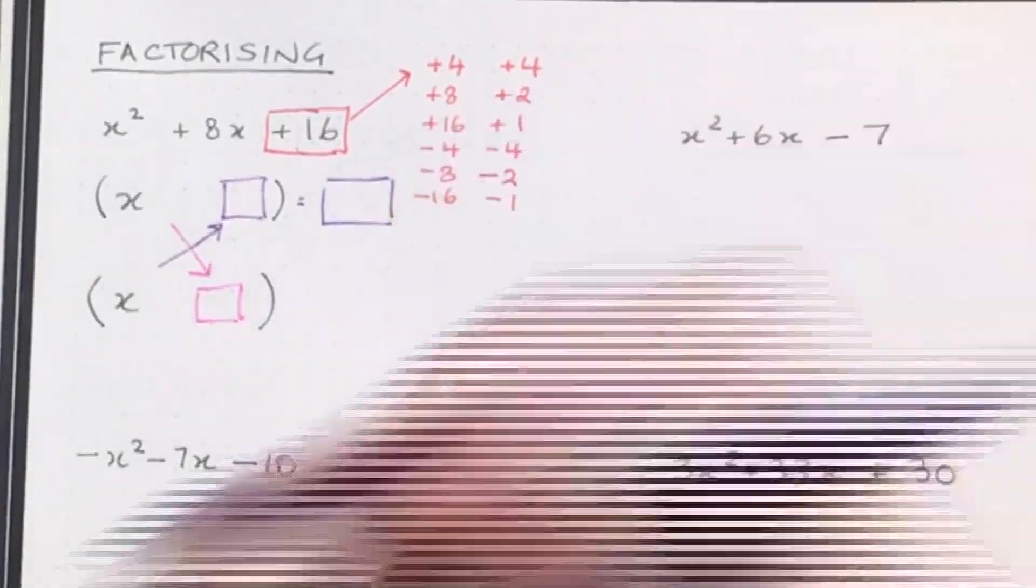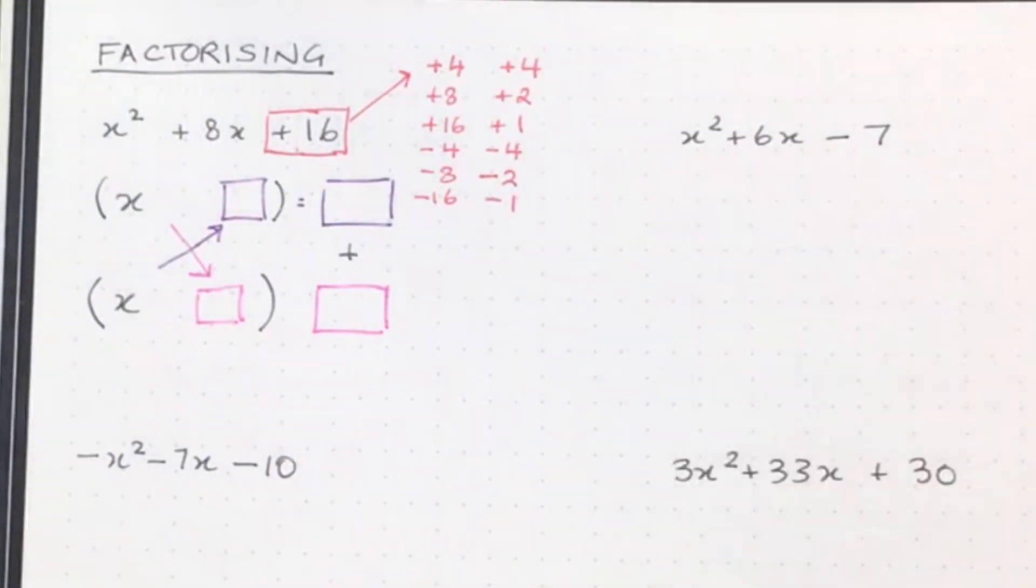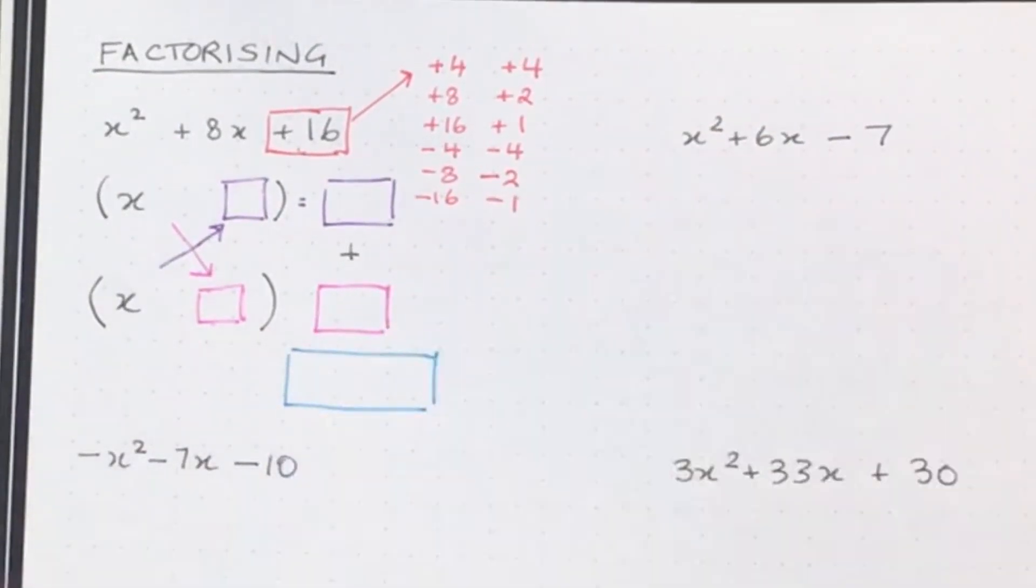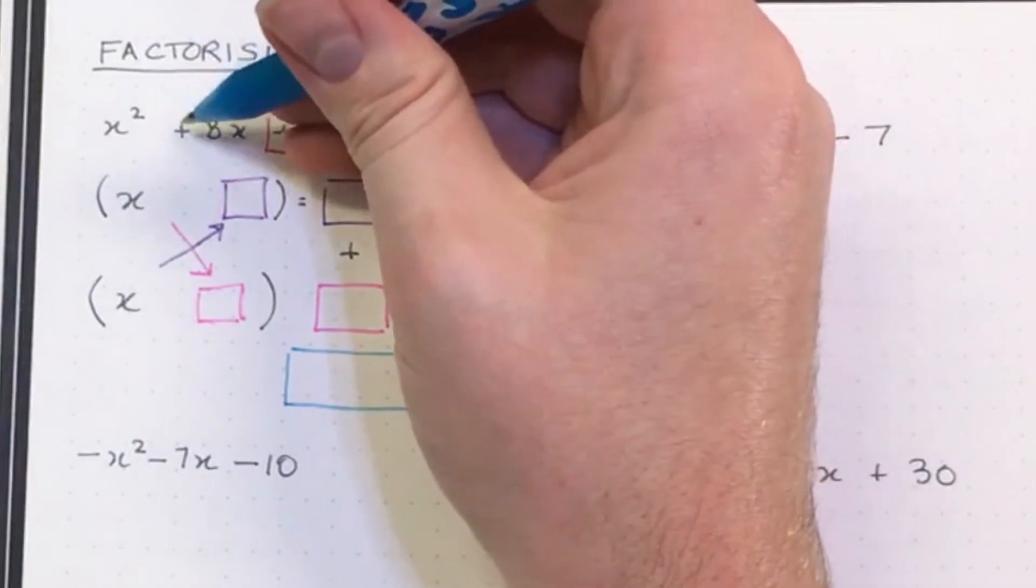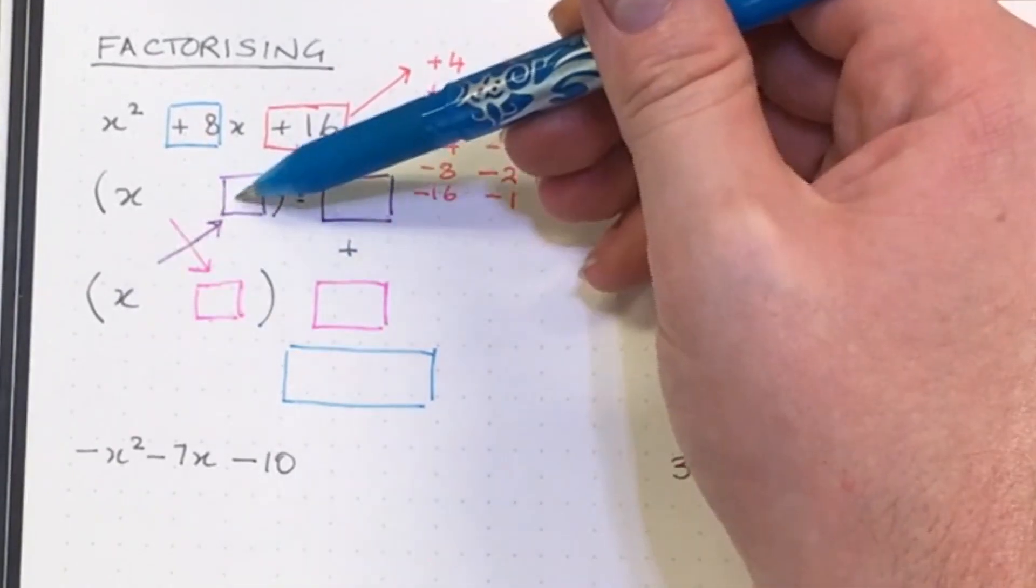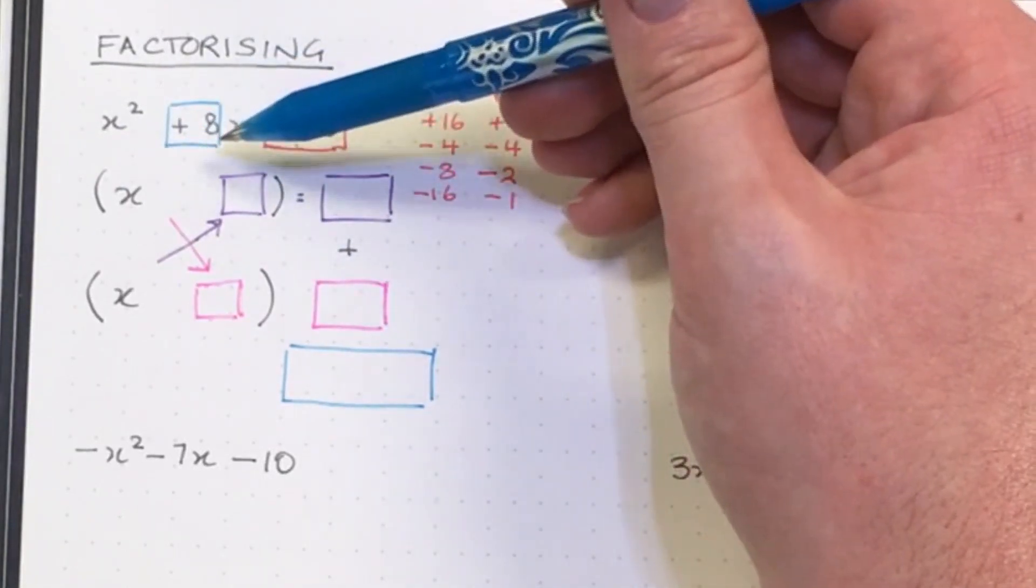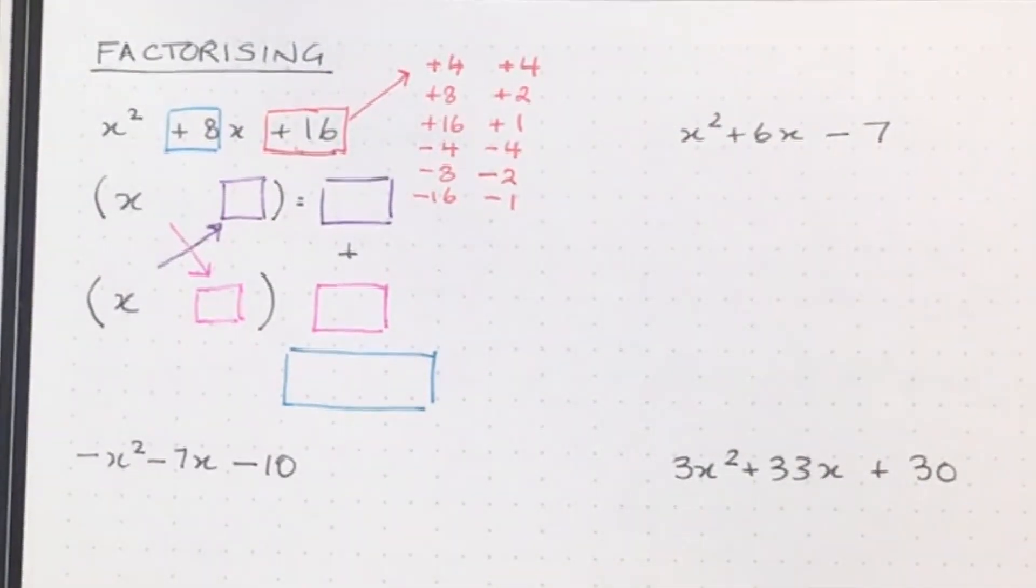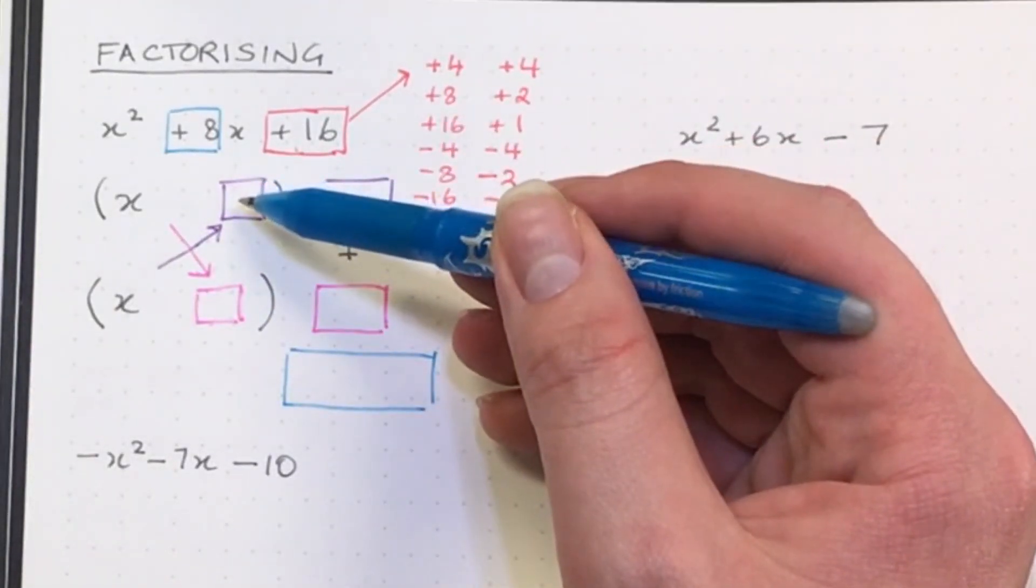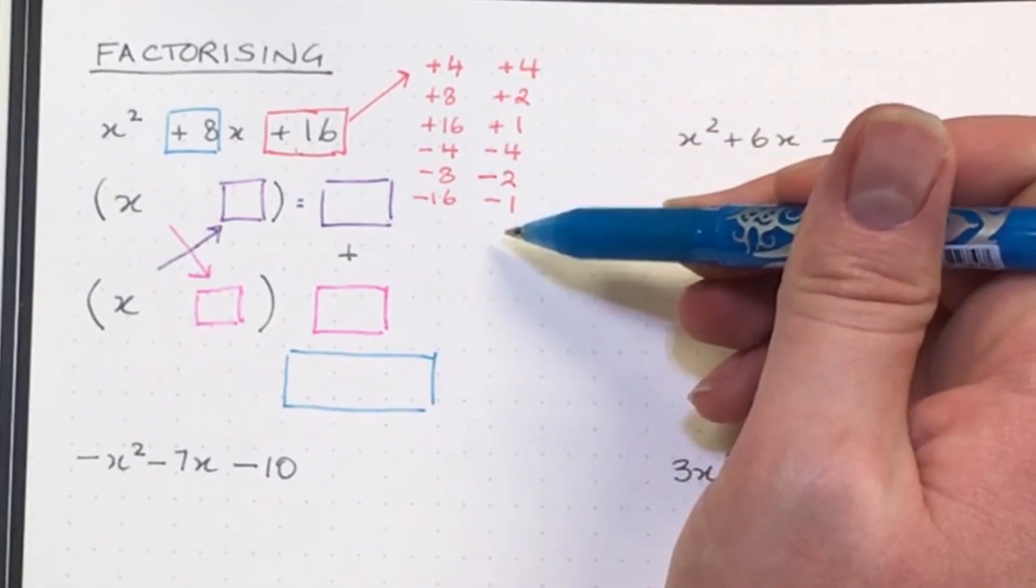Essentially, x times some number and this x times another number - whatever they equal when I add them together, they have to equal this number next to the x here. So I've got to choose a number in this bracket and a number in this bracket out of the combinations we already have.